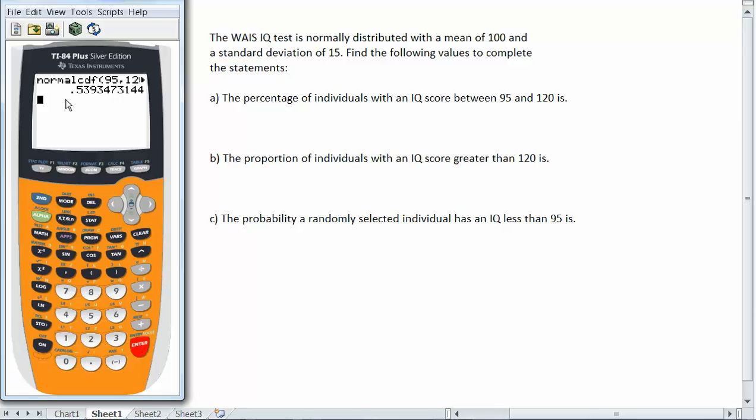And now I get my result, 0.5393. Well, rounded to four decimals this is 0.5393. But this particular problem asks for it as a percentage, so you can either multiply by 100 or just with your mind's eye move the decimal to the right two places.